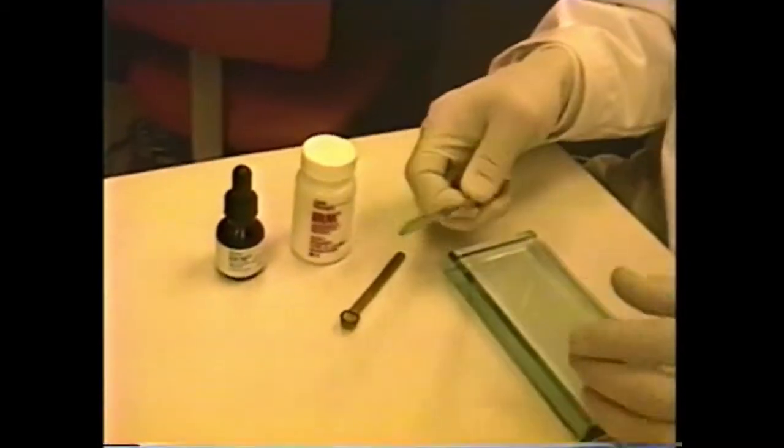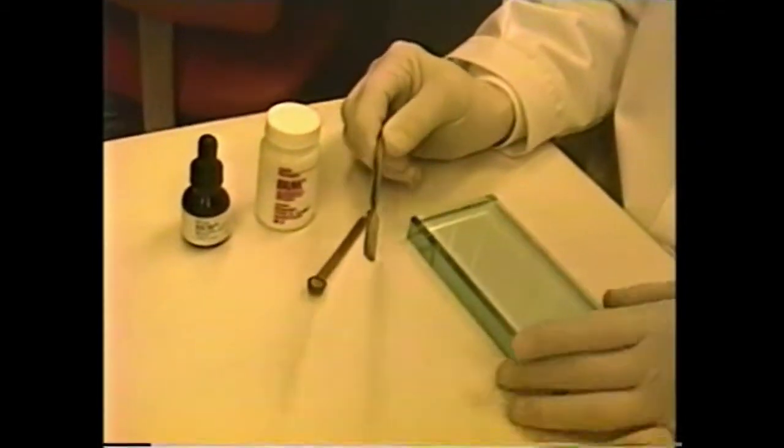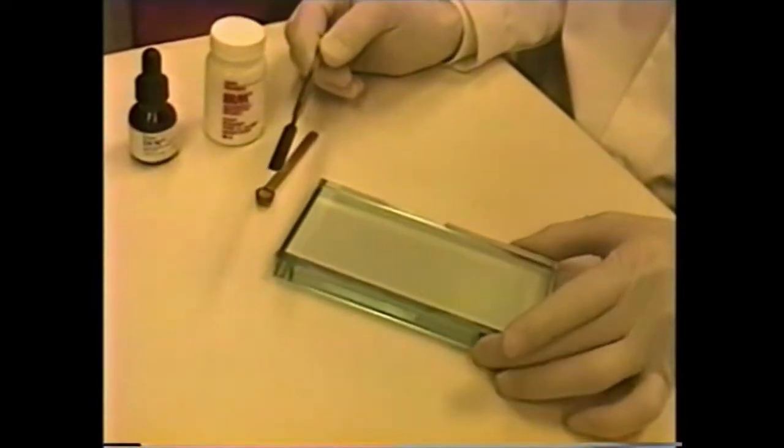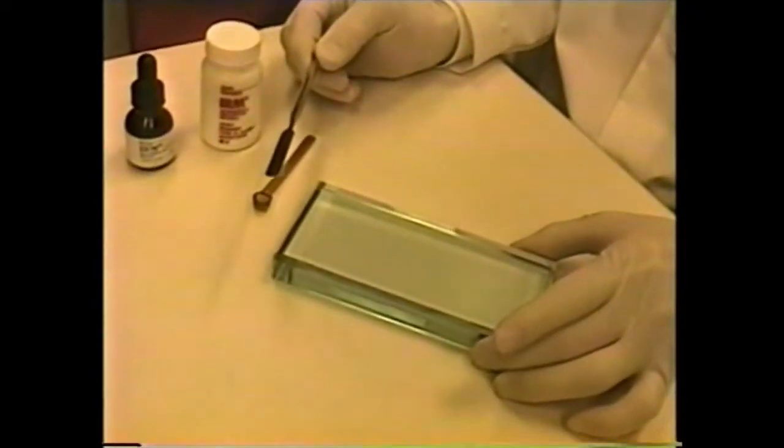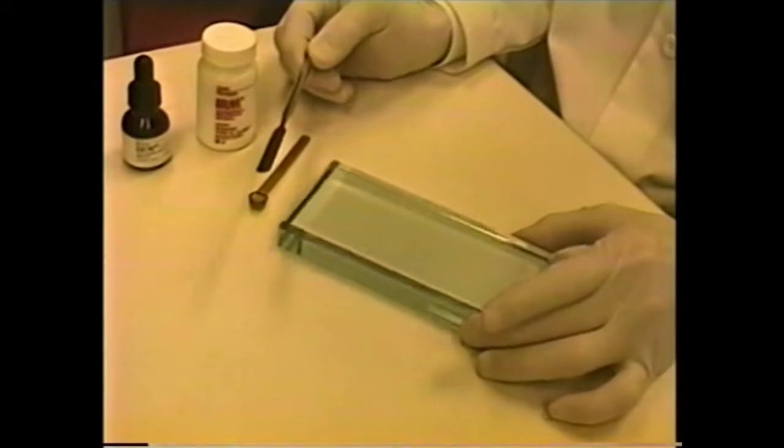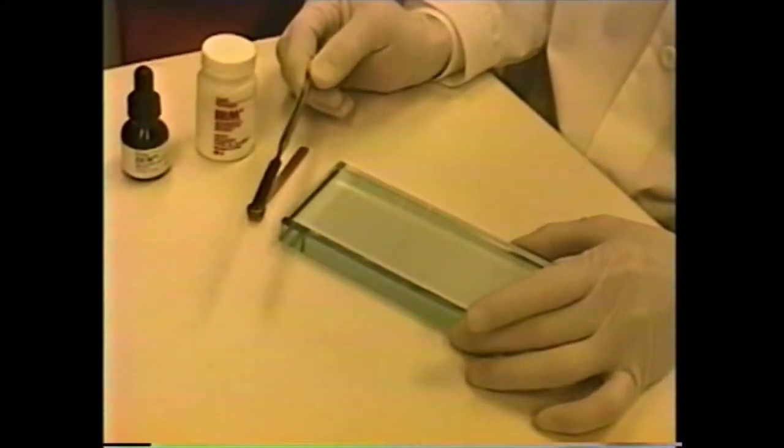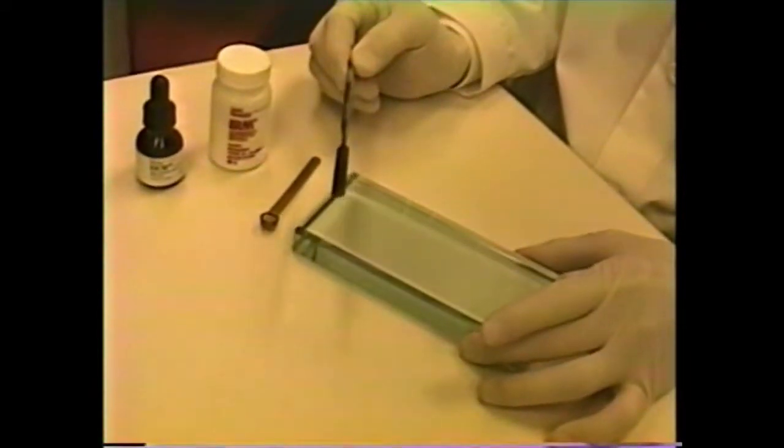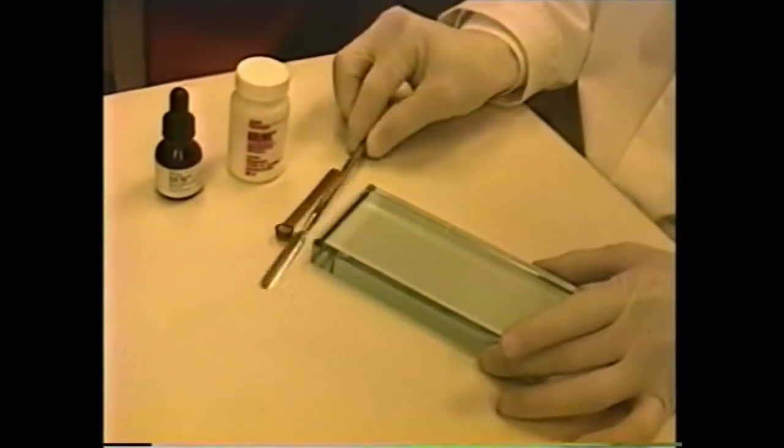In addition, you need a cement spatula for mixing and the cement slab. The cement slab in this case does not have to be chilled. It can be used at room temperature because there isn't a requirement for extending working time or dissipating the heat of reaction.